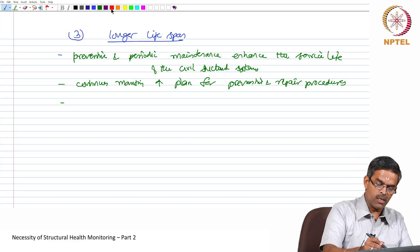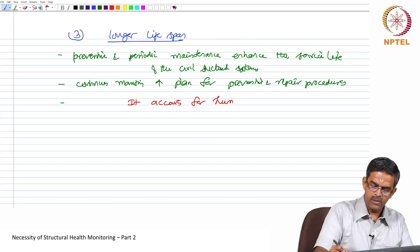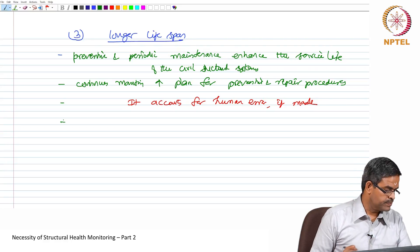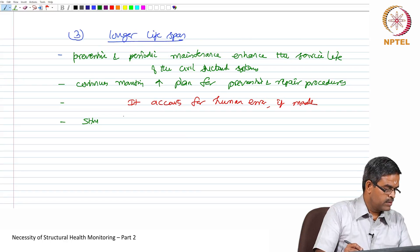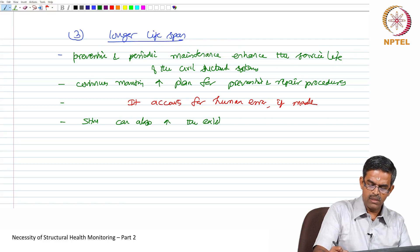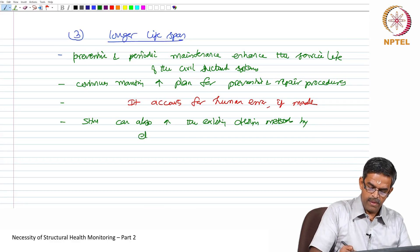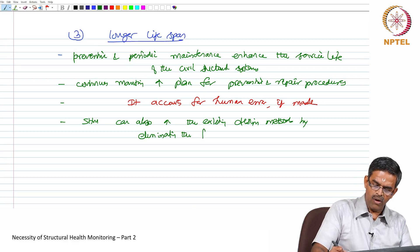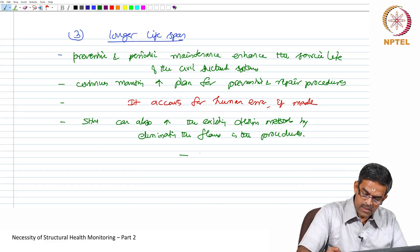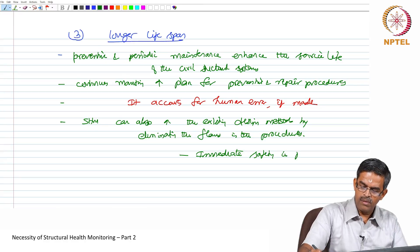Most importantly, it accounts for human errors if made. SHM can also improve the existing design methods by eliminating the flaws in the design procedures. This enhances immediate safety in public buildings.